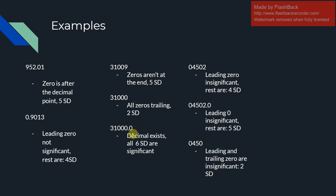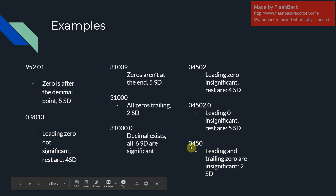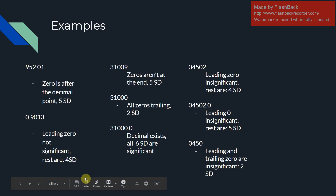Looking at 31,000.0 — since we do have a decimal place, all of the digits are significant, every single one. Looking at 0.5020 — the leading zero is insignificant, but every other digit is significant, even the trailing zero, because there is a decimal point, giving you four significant digits. And finally, 450 — these trailing zeros are insignificant because there's no decimal point, and leading zeros are always insignificant, giving you two significant digits.